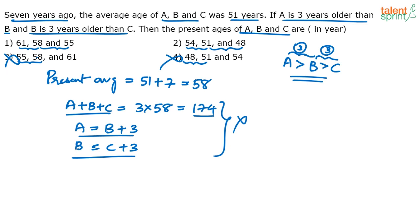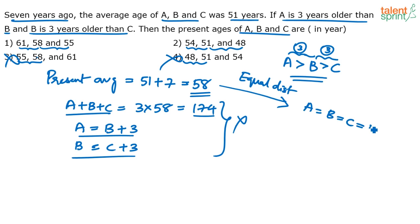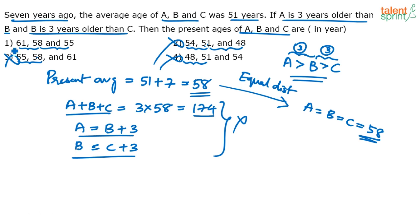Now, if you look at the average again — we know the average is 58. By equal distribution, A, B and C should all equal 58. Looking at option 2, A is 54, B is 51, C is 48 — all three are less than 58. If all values are less than 58, how can the average be 58? Not possible. So the only possible answer is option 1: 61, 58 and 55.